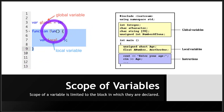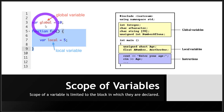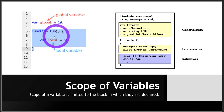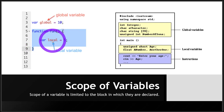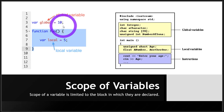A variable that has been defined outside the function is a global variable. That means it can be accessed from within the function as well as from outside the function. But a variable that has been declared within the curly brackets — inside the function — cannot be used outside the function. It can be used from inside the function but not outside.